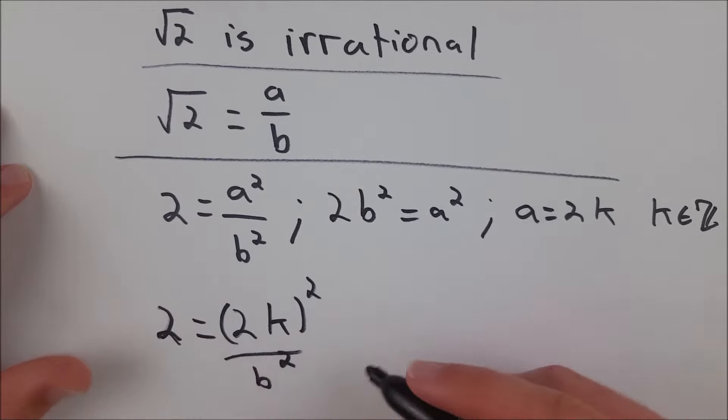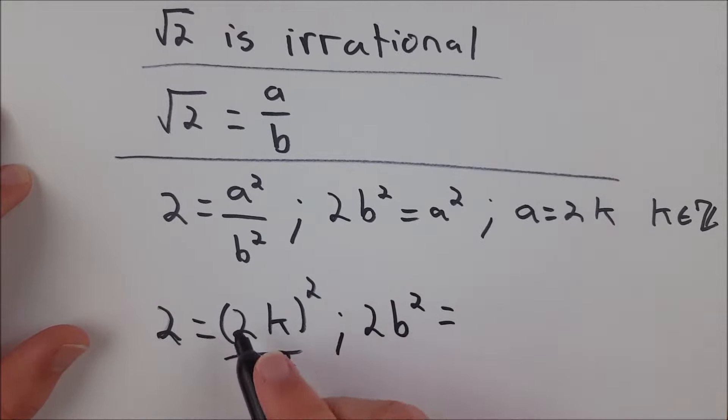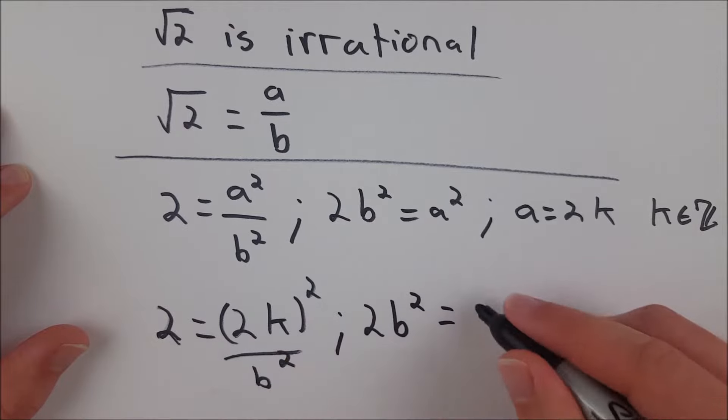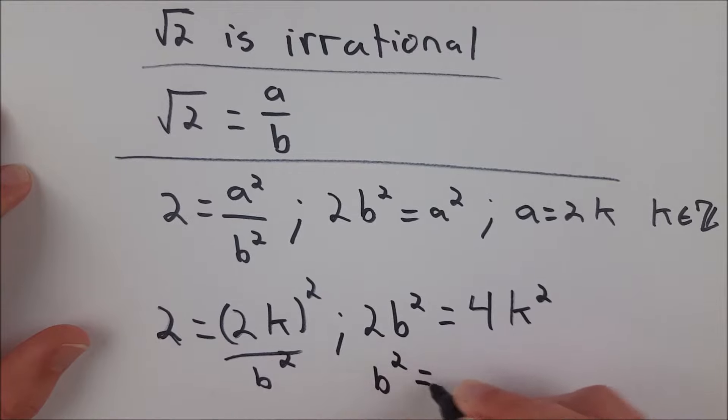Now again we can multiply both sides by b squared and we get 2b squared equals—well if we square this we get 2 squared which is 4 multiplied by k squared which is k squared. Now we divide both sides by 2 and that leaves us with b squared equals 2k squared.